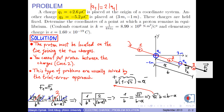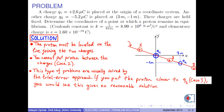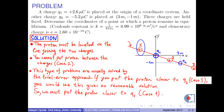Since 1 is less than √2, then 1 − √2 is negative. And because the distance B is positive, according to this equality A should be negative. However, A is a distance, so it cannot be negative. As a result, if you put the proton closer to Q2 (case 3), this gives no reasonable solution. So we must put the proton closer to Q1, as shown in case 1.